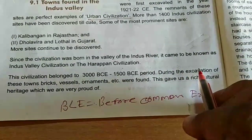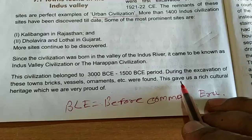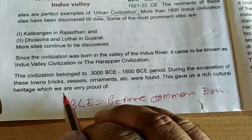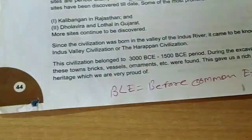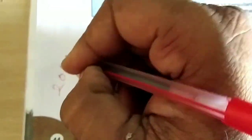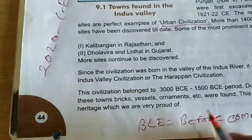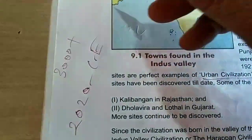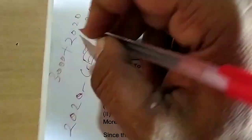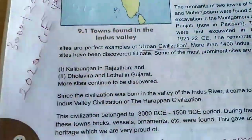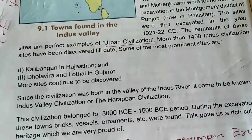During the excavation of these towns, bricks, vessels, ornaments, etc. were found. These gave us a rich cultural heritage which we are very proud of. BCE means Before Common Era. This is 2020, which is Common Era (CE). Before Common Era — 3000 BCE means 3000 plus 2020, so 5020 years. Our civilization, the Indus Valley Civilization, is about 5000 years old.